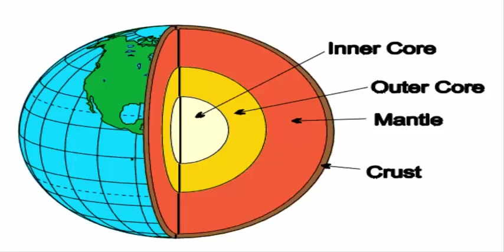First, let's talk about the layers of the earth. The earth has three layers: the lithosphere, also called the crust; the mantle; and the core. The lithosphere or crust is the uppermost layer of the earth's surface. It is the thinnest of all the layers, about 35 kilometers deep. In other words, to reach the mantle you need to go 35 kilometers down.